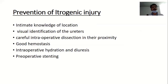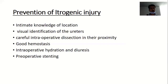In order to prevent iatrogenic injury, one should have intimate knowledge of the location of the ureter, proper visual identification of the ureter, careful intraoperative dissection in the proximity of the ureter, and maintaining good hemostasis with intraoperative hydration and diuresis. In difficult cases where there is already a predictable risk of injury to the ureter, preoperative stenting can also help in identifying the ureter intraoperatively.